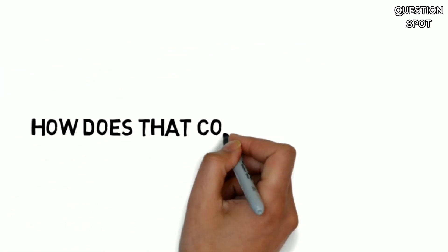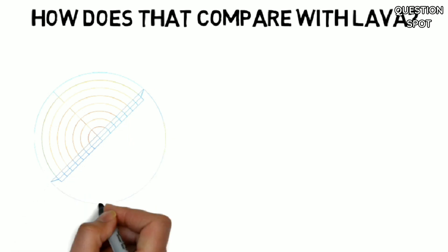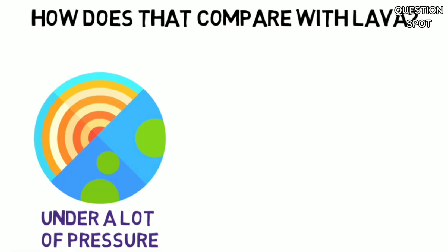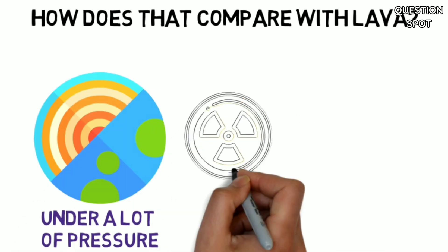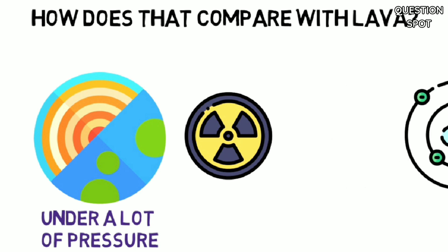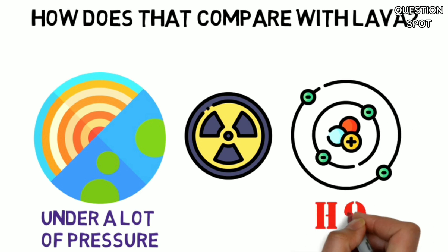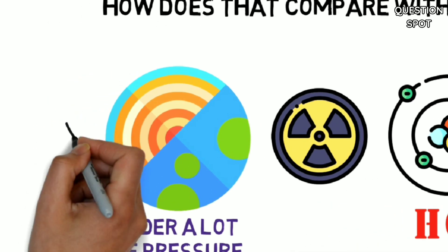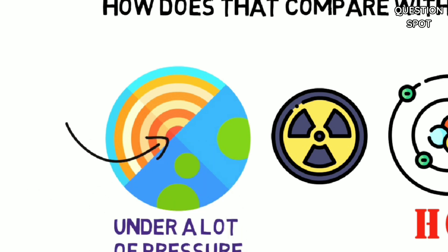How does that compare with lava? Molten rock in the mantle under Earth's crust is under a lot of pressure. Radioactive particles also knock the molten rock's atoms around, making them hot. Close to Earth's core, the mantle's temperature can be as high as 4000 degrees Celsius.